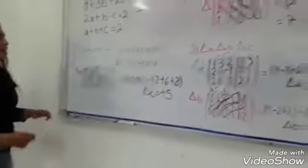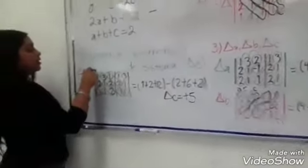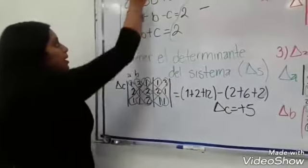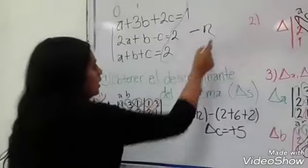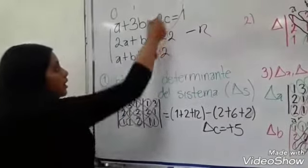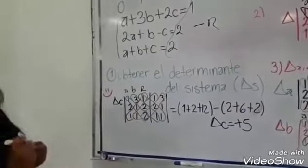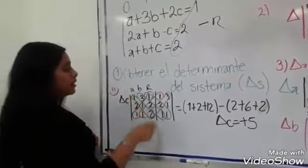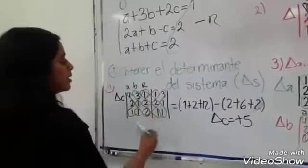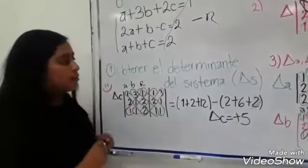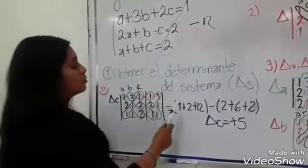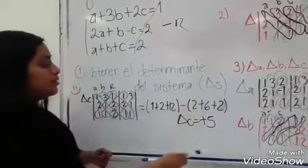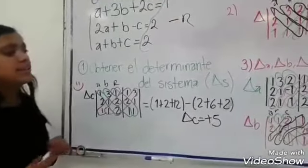Después, para sacar el determinante de C se hace lo mismo. Este es el valor de las columnas de A, este es el valor de las columnas de B, y en la de C se vuelve a poner el resultado de las ecuaciones que tenemos. Igual se vuelve a hacer lo mismo: se agregan dos columnas al final y se vuelven a hacer las operaciones de la misma manera. Entonces tenemos 1 más 2 más 12, menos 2 más 6 más 2. Y el determinante de C es 5.